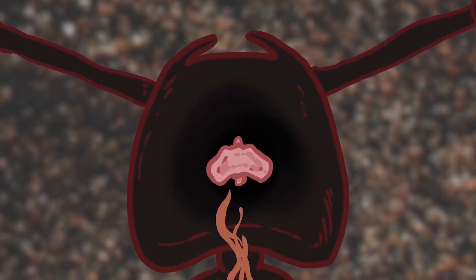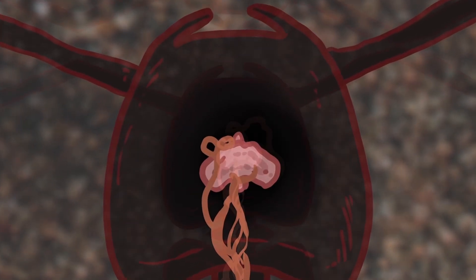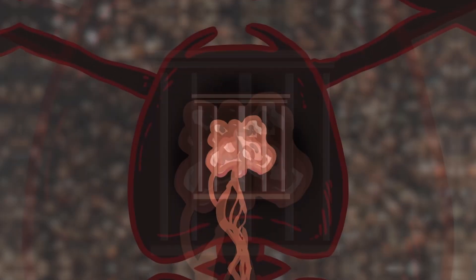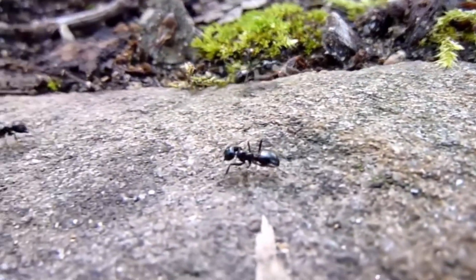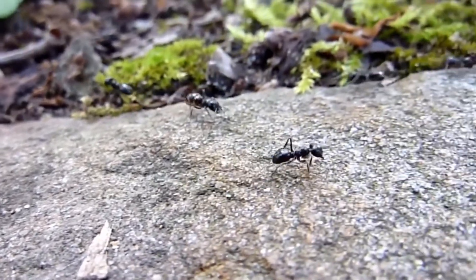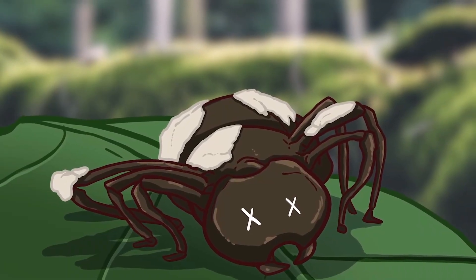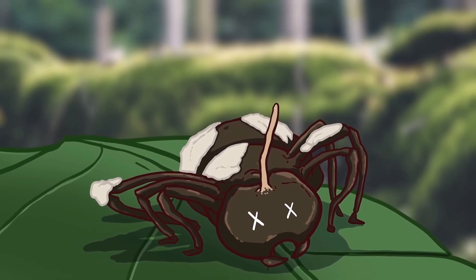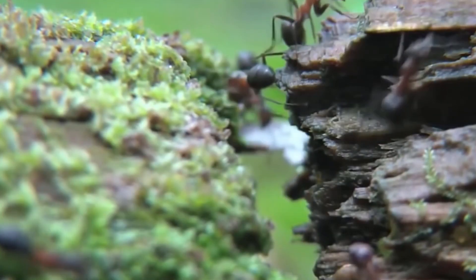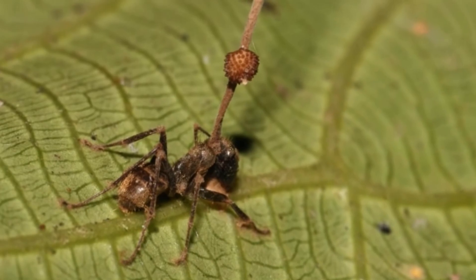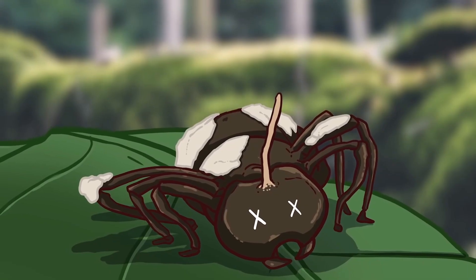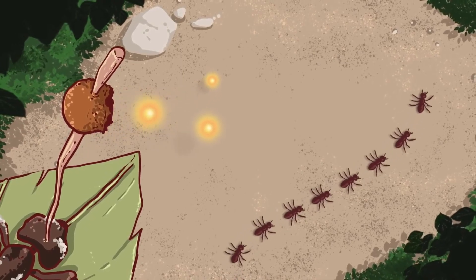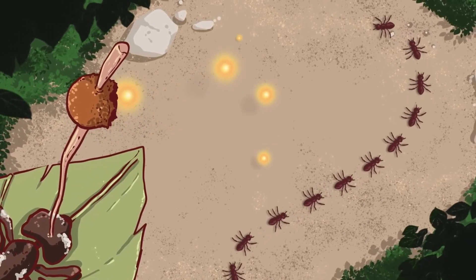Importantly, the fungus doesn't touch the brain itself, so the brain remains fully functioning. Besides slowly growing out of the ant's body, the fungus searches for a perfect spot on a leaf for growing. The ant then performs a so-called death grapple, biting into the leaf so it dies in place and the fungus can remain in an area perfect for growth. It will grow a fruit-like ball out of the ant from which spores spread and land on other victims.